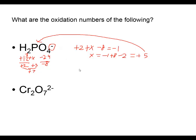If I consider the dichromate ion Cr₂O₇²⁻, it has two chromiums and seven oxygens. The oxygen is a negative two and not a peroxide, so with seven oxygens the total is negative fourteen. My oxidation number for chromium is x, but I have two of them, so I put a two x.